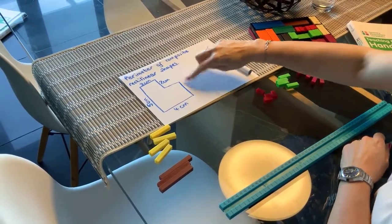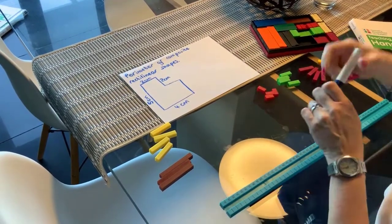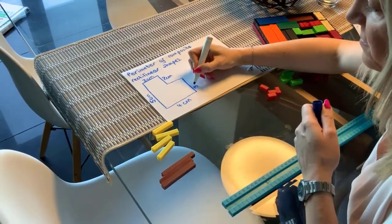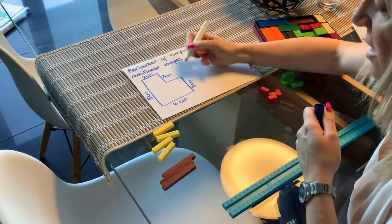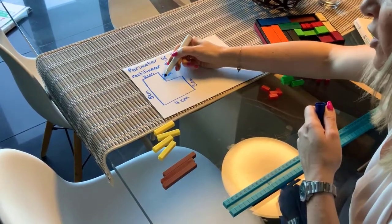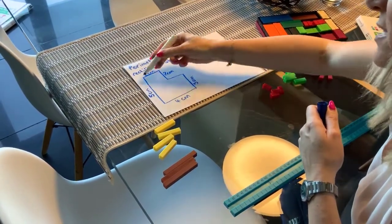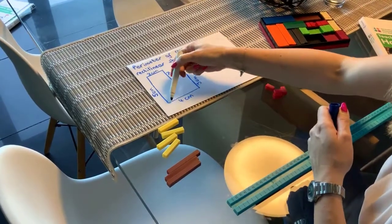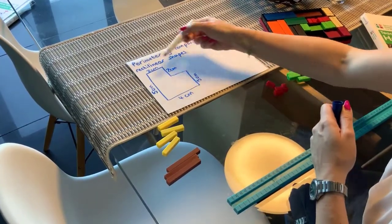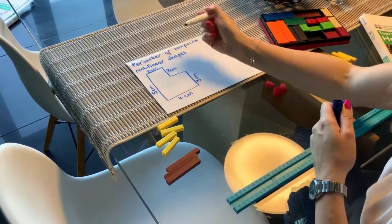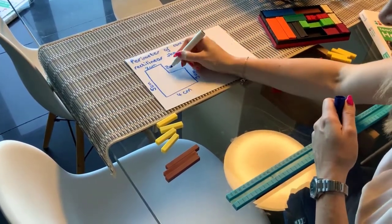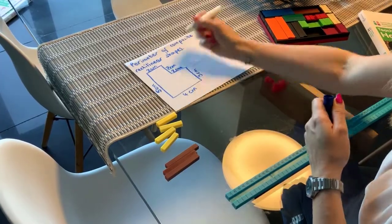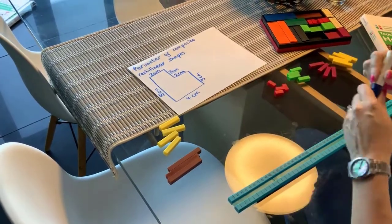We can see this side here is going to be 3 centimetres, because we have 2 plus something makes 5. So that's definitely 3. This whole length is 4, and we've got 2 centimetres here, so this length here has also got to be 2 centimetres.